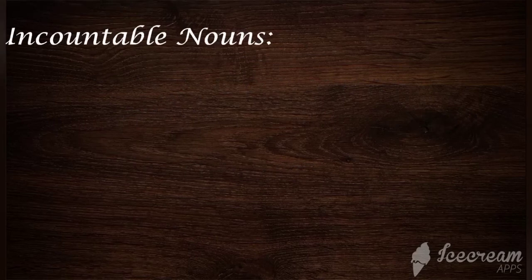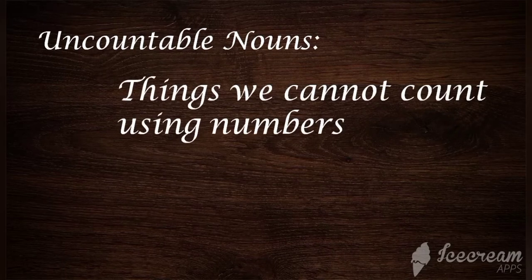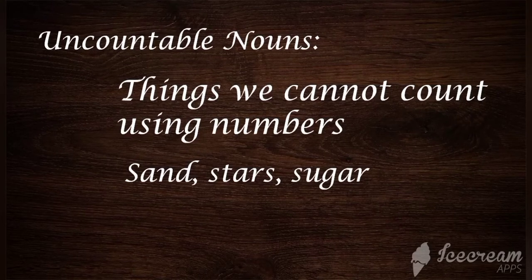Uncountable nouns are things we are not able to count using numbers. For example, sand — can you count sand? No, it's very difficult and we can't count it. And stars — can you count stars? No, you are not able to count stars. And sugar — are you able to count sugar? No, it's impossible. These things come under uncountable nouns.